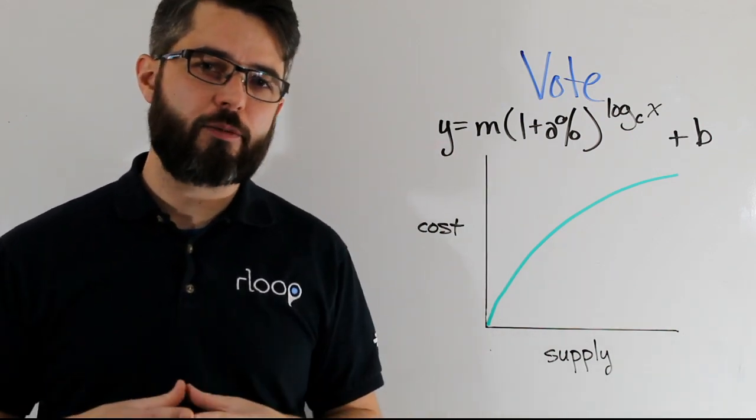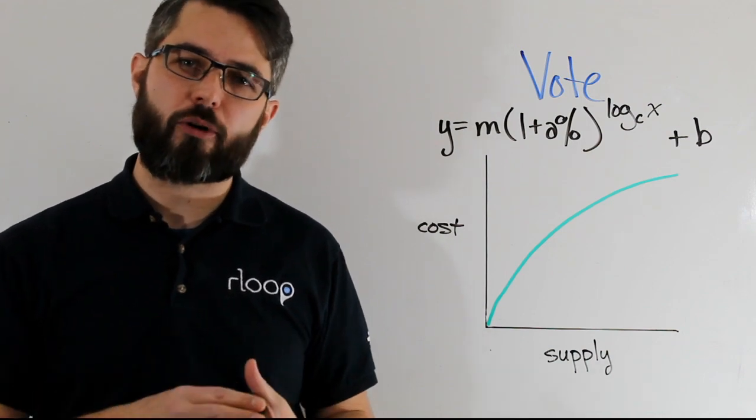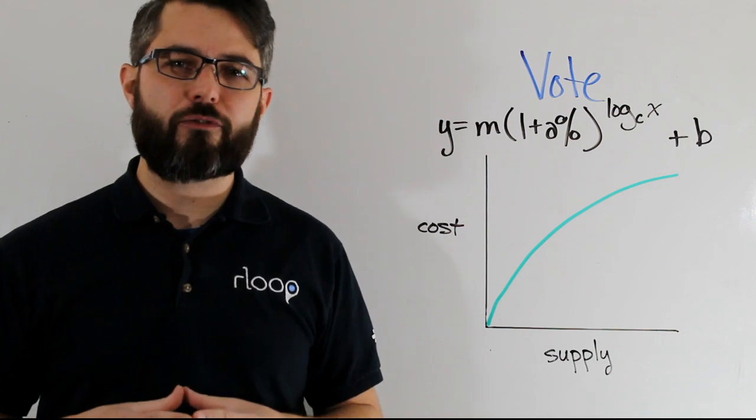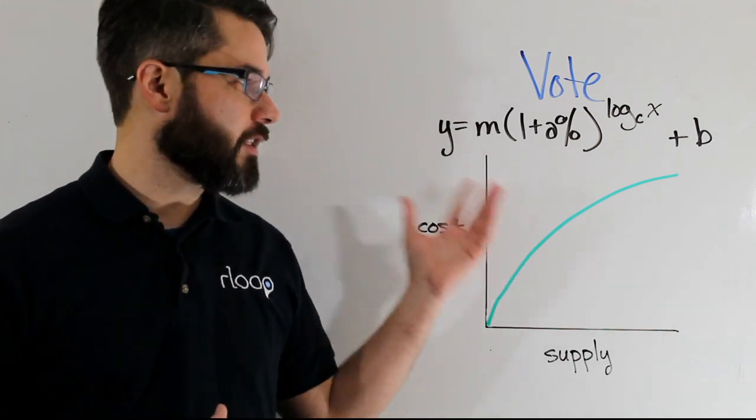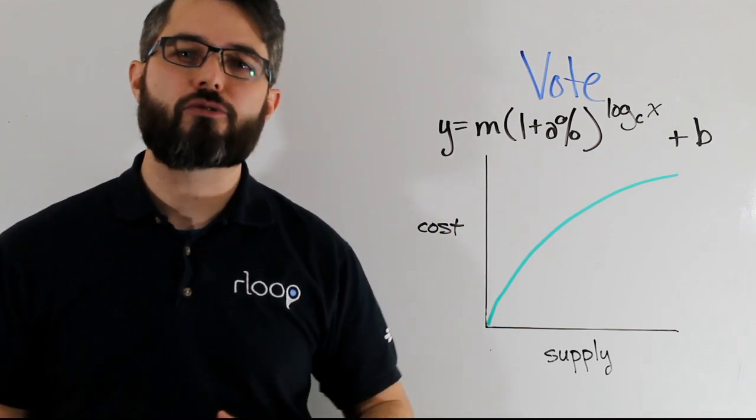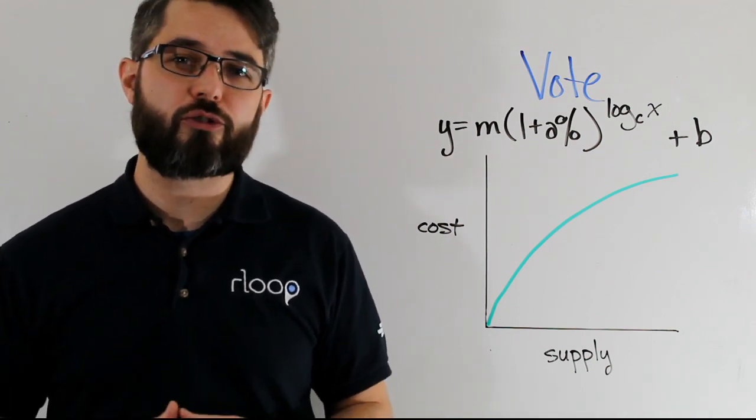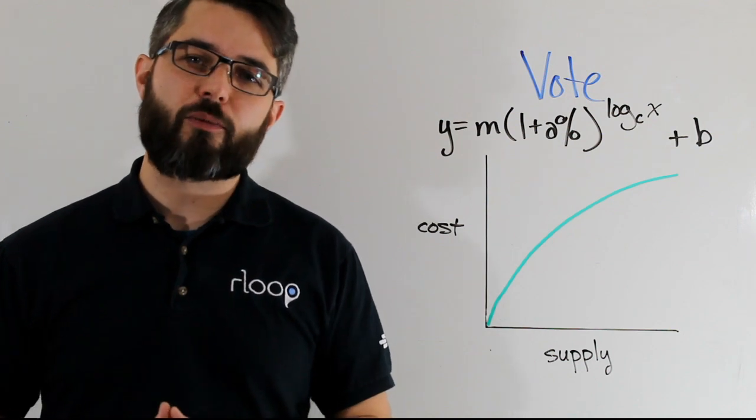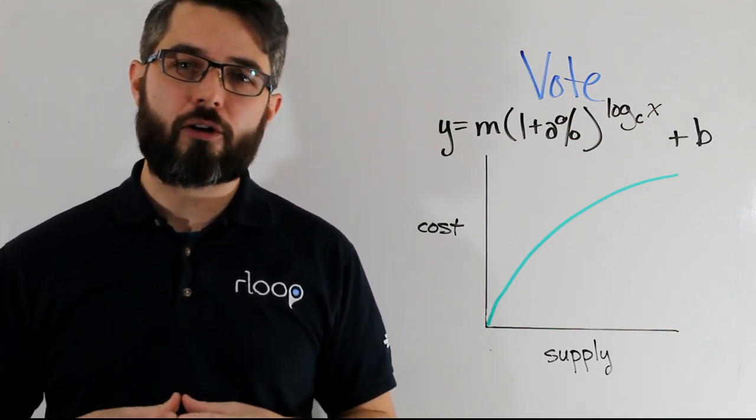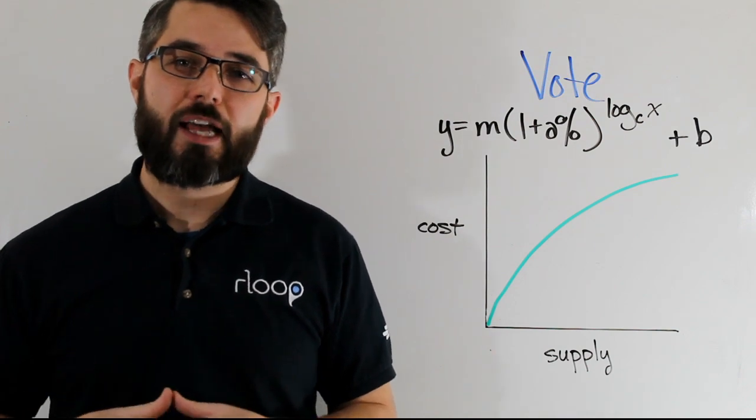Now in order for a project to be able to reward contributors to a project as well as to fund some of its own development, we still need a way for it to extract some value from this bonding curve, and we're going to examine how we propose to do that in the next video. So make sure that you're subscribed to our YouTube channel so you get notified when new videos are posted, and you can always check our website at rloop.org for more documentation and information.